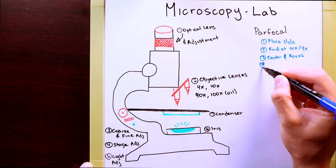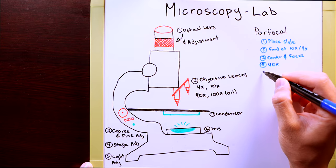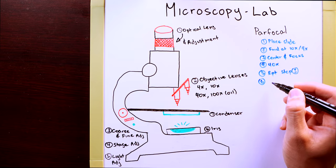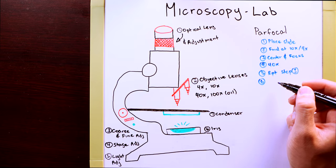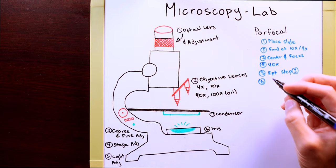Then you can proceed to your 40x before repeating step 3 and then you don't move to oil immersion just yet. Between the 40x and the 100x there's a gap there.